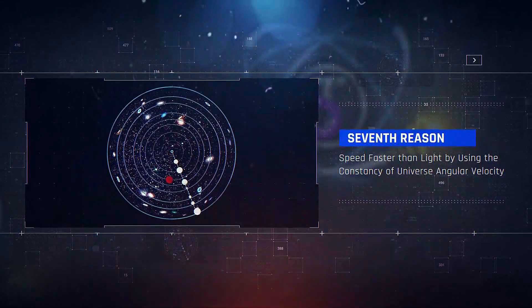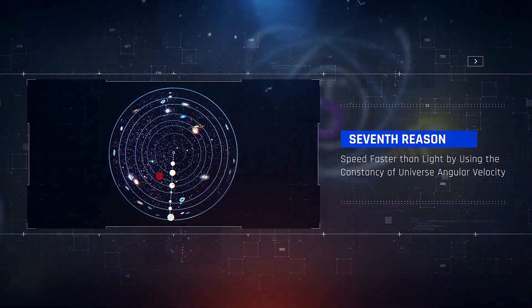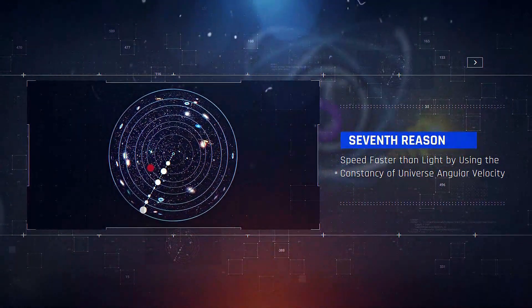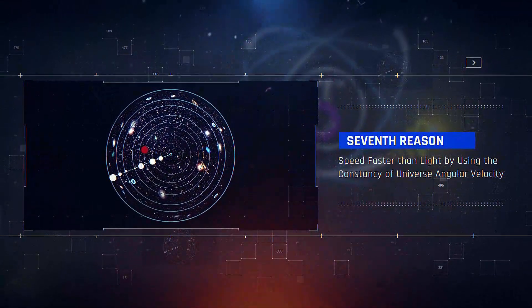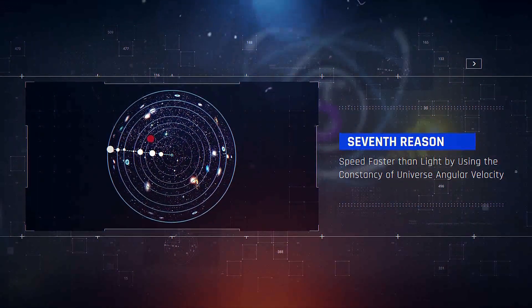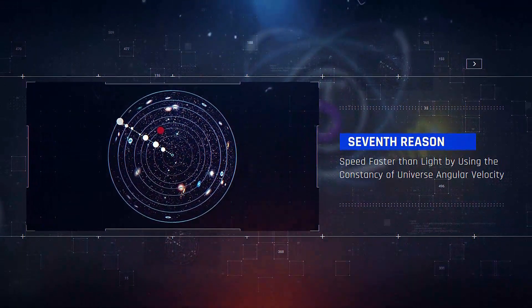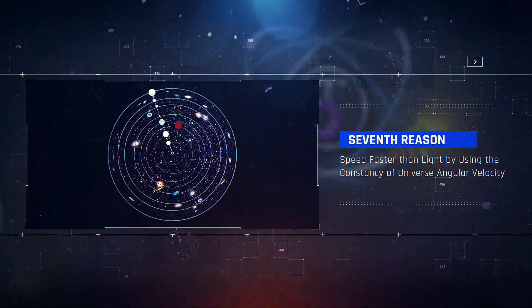the isotropy and homogeneity of the universe states that the universe is uniform. Therefore, in a homogeneous environment, physical quantities such as angular velocity do not have sudden and intense changes, and at all points are equal to other points.